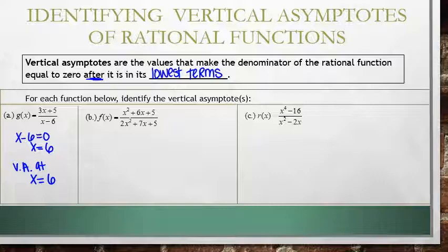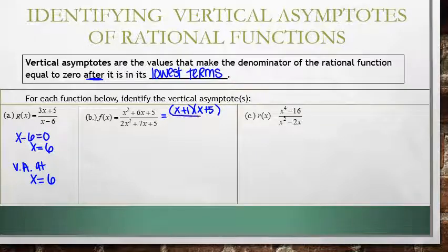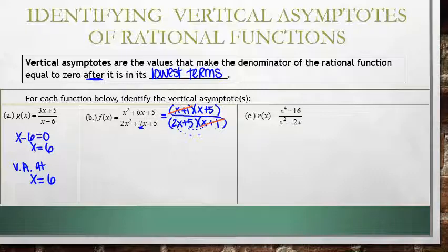For letter B, to find the vertical asymptotes, simplify the rational function first, then find when the denominator equals zero. Factoring the numerator gives x plus 1 times x plus 5. The denominator factors into 2x plus 5 times x plus 1, since 2x plus 5x gives the 7x needed in the middle. We can then cancel the x plus 1 factor from numerator and denominator, leaving x plus 5 over 2x plus 5.